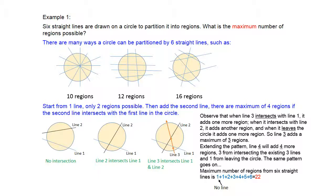Using this pattern, we don't have to draw all six lines because that would be quite messy. The expression tells us the maximum number of regions formed by drawing six straight lines on a circle. The first number is a special case — when there's no line, just one circle, we already have one region. Introducing each line adds one, then two, then three more regions and so on. The total number of regions with six lines on a circle is 22.